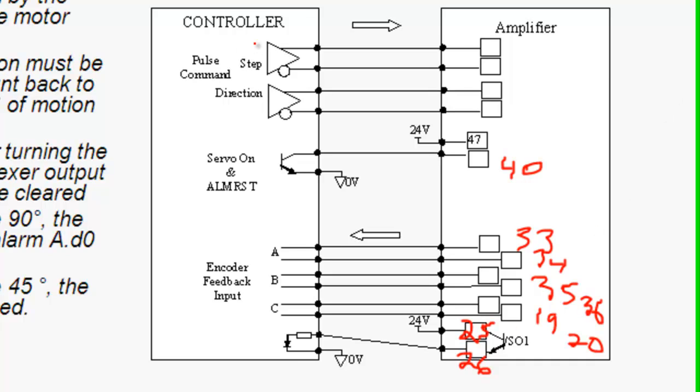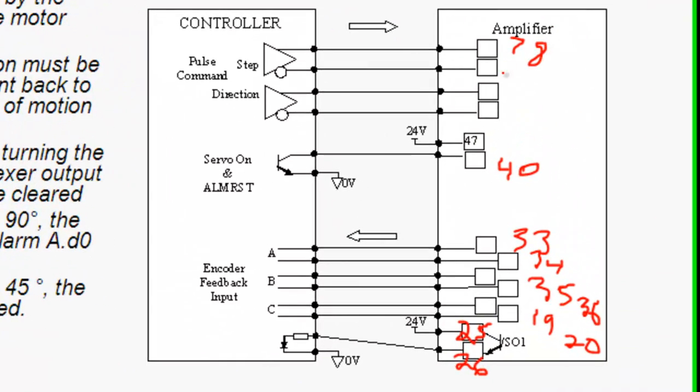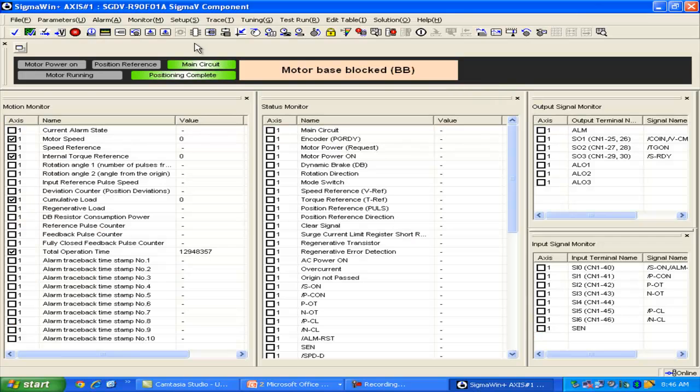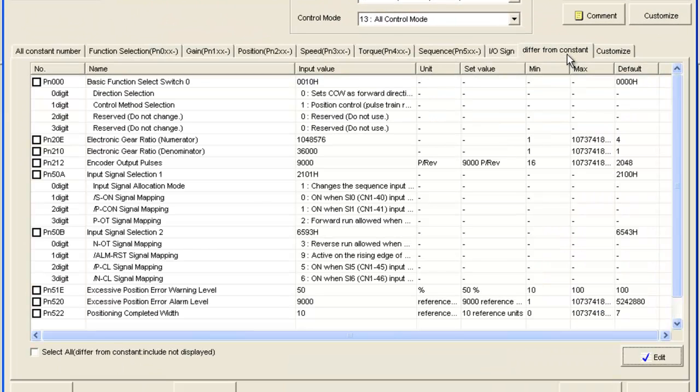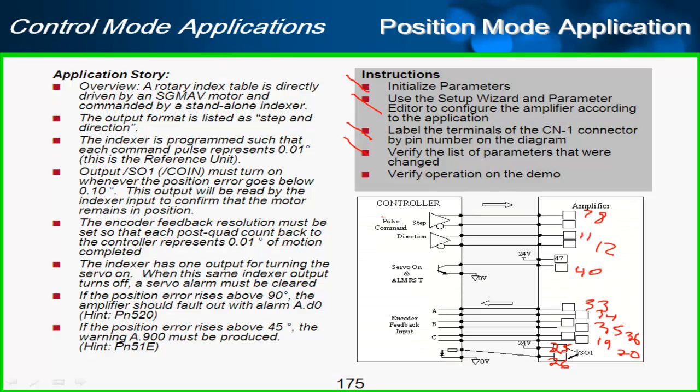I'm missing the command reference here, step and direction. And that's up here to the reference here, pulse and sign, 7 and 8 and 11 and 12. So where am I at? I've initialized the parameters, I used the setup wizard and the parameter editor, labeled my terminals. I could see a list of the parameters that have been changed by going to the parameters menu again. Opening up differ from constant and just take a look here, be sure that everything is in place. And now let's verify operation on the demo.